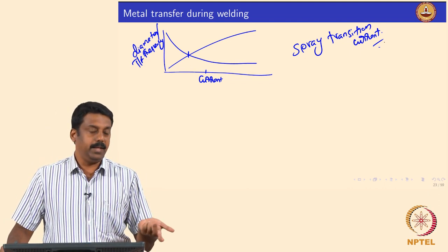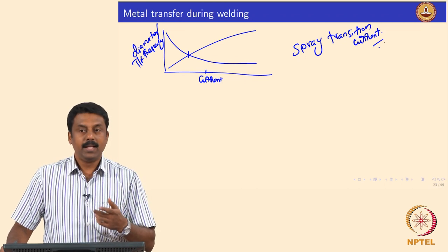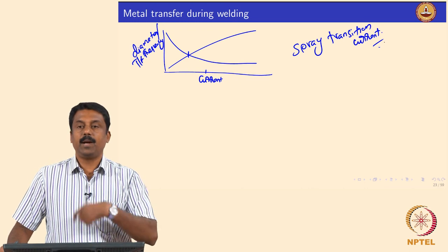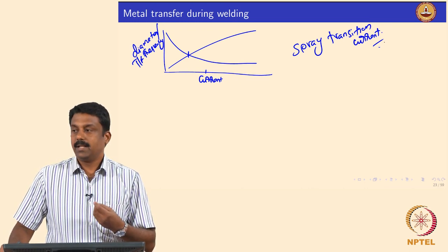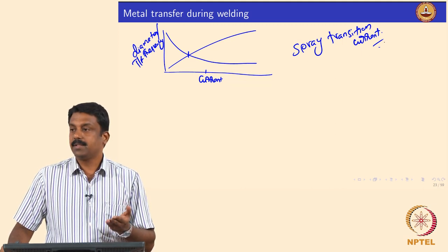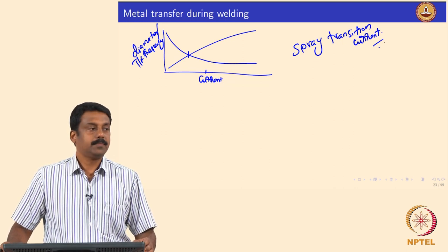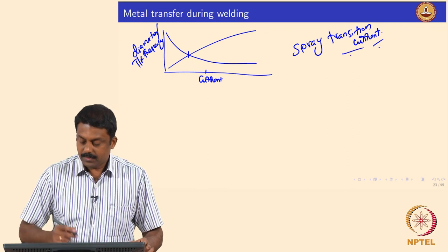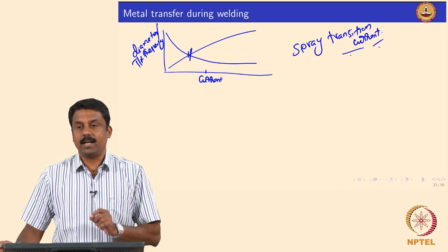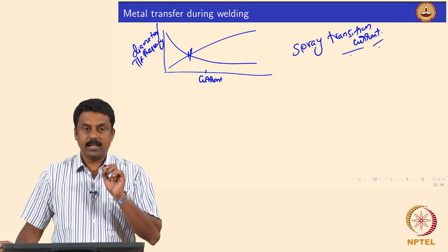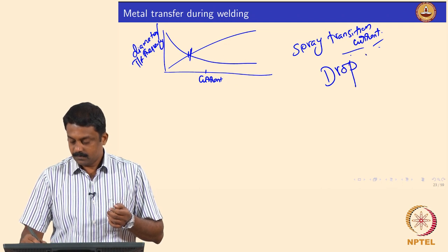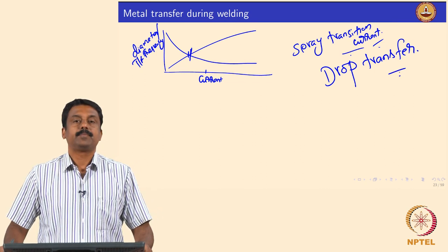When designing a welding procedure specification (WPS), one factor we consider is the spray transition current — what current for a given wire diameter the spray transition is observed. We can then play around with other parameters such as shielding gas, arc length, and wire feed rate to control heat input. The ideal transfer is spray transition — the drop transfer — where the droplet diameter is almost equal to the filler diameter.